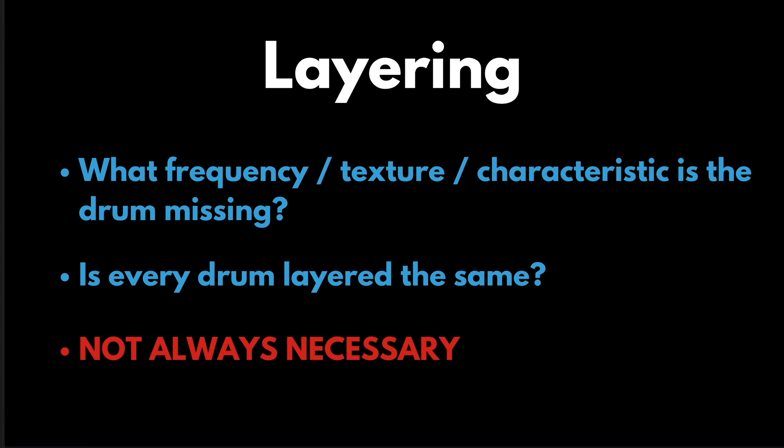Next, let's talk about layering drums. This is another thing where it's super easy to overdo it. When thinking about layering a drum, ask yourself: what frequency, texture, or characteristic is this drum missing? I've seen a lot of people just start stacking drums — two snares, a clap, and a hat — but all you're really doing is creating a huge transient peak where none of the individual tones can shine. You end up with a blob of sound, a huge peak you either have to heavily compress, clip, or limit.